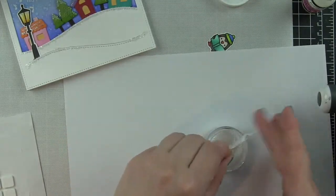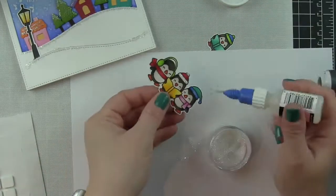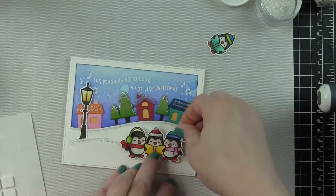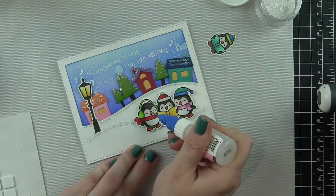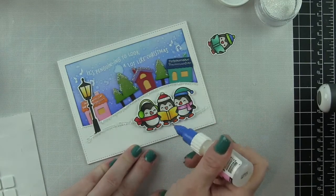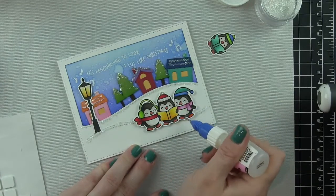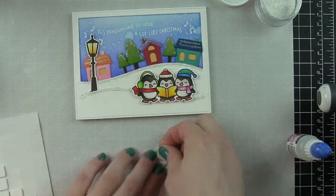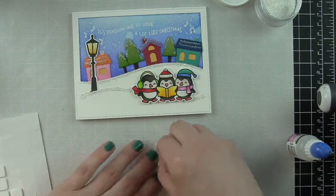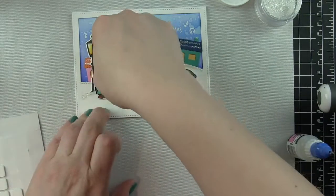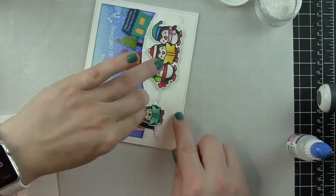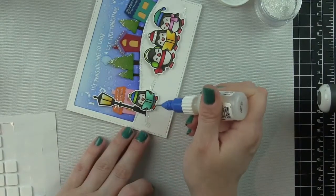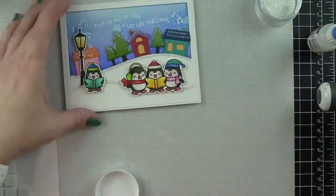On the middle penguin stocking cap, I added glue to the brim and the pom-pom and I'm going to sprinkle Prisma glitter on that to make it a little glittery, and add glossy accents to the penguin's noses and feet so that they're glossy. I will do the same thing to my remaining penguin who I'm going to tuck over here next to the light post.